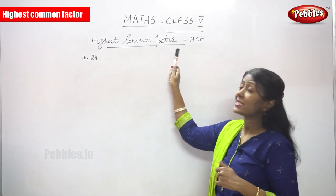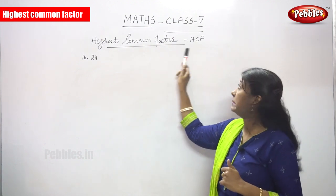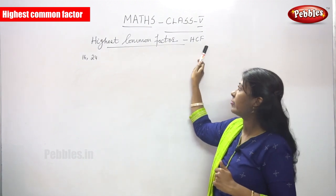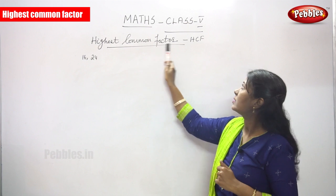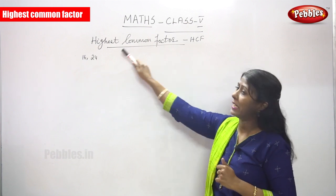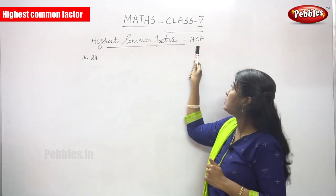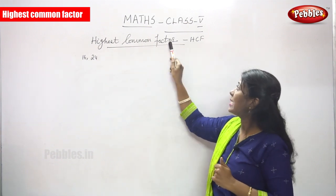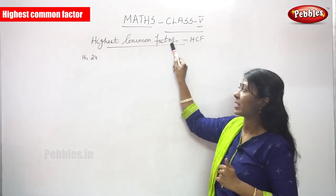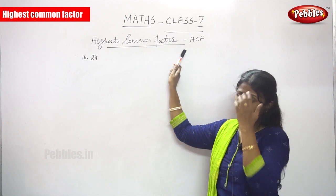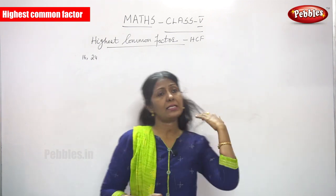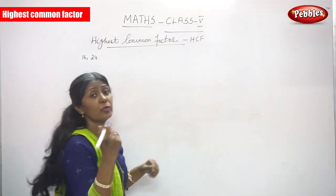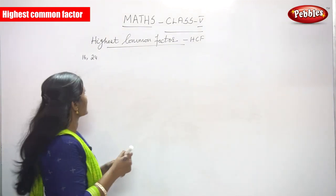Now we are going to see Highest Common Factor, that is HCF. H means Highest, C means Common, and F means Factor. We are going to do a sum, then you can understand the concept well.